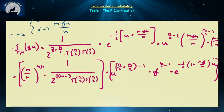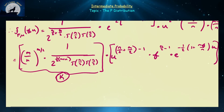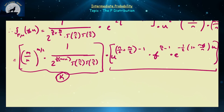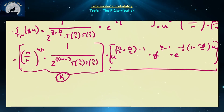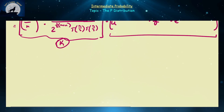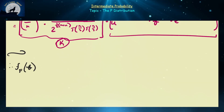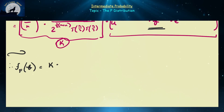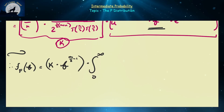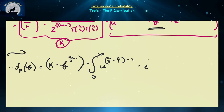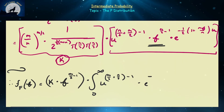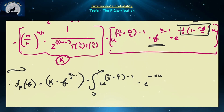Everything on the left-hand side is a constant K. The PDF of F is obtained by integrating out U from 0 to infinity. We factor out F^(M/2 - 1), leaving an integral of U^((M+N)/2 - 1) times e^(-alpha*U) dU, where alpha = (1/2)(1 + MF/N), which is a positive number.